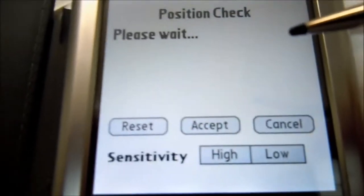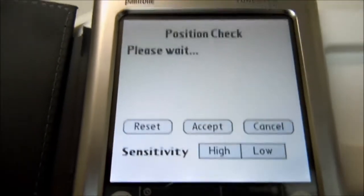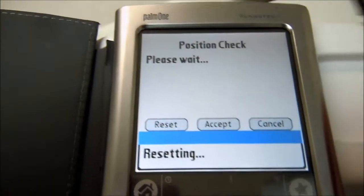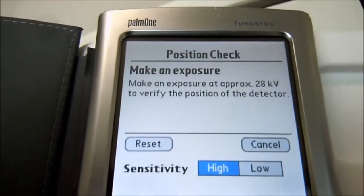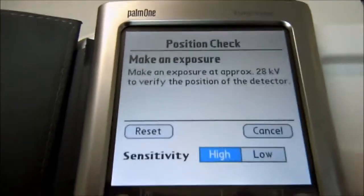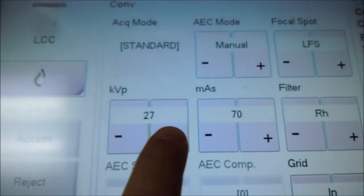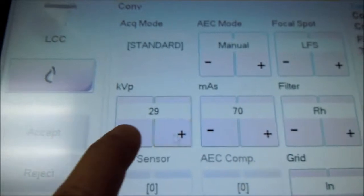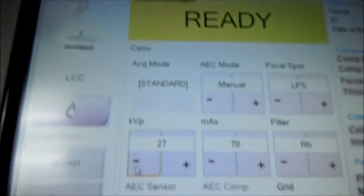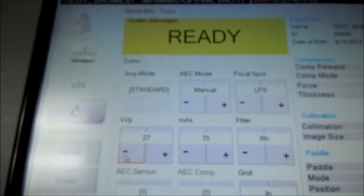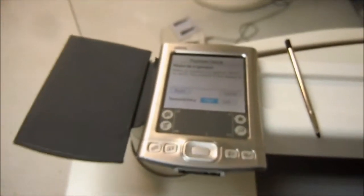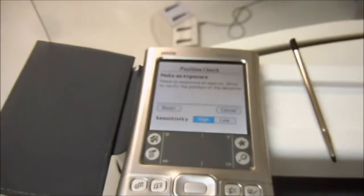Changing the filter. Right now it's asking us to do a position check, which we're going to have to make an exposure at 28 KV to verify the position detector. We're going to change this back to 28 KV. And I'm going to make an exposure. I'm going to pause the video because I need both hands.